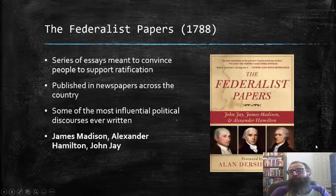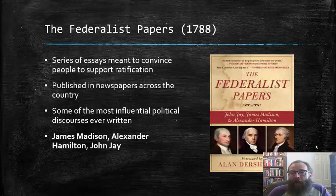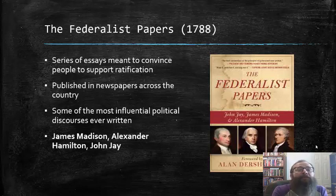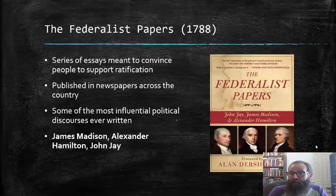In 1788, three of the most ardent and vocal of those in the Federalist camp published what have become known as the Federalist Papers. John Jay, James Madison, and Alexander Hamilton each published a series of essays in newspapers across the country, meant to convince the people to support ratification of the Constitution. These papers were some of the most influential political discourses ever written, and the ideas espoused in the Federalist Papers are still looked to today by both politicians and historians when considering issues of constitutional merit.